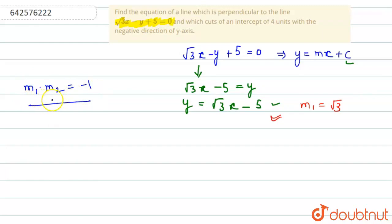Now, we know m₁, we can find out m₂. So, what is m₂? m₂ will be... this is m₁ × m₂ = -1. So, m₂ = -1/√3.